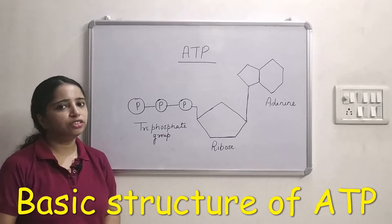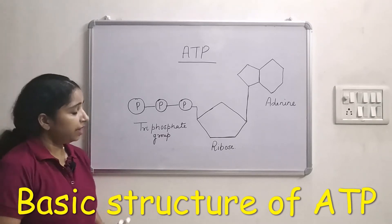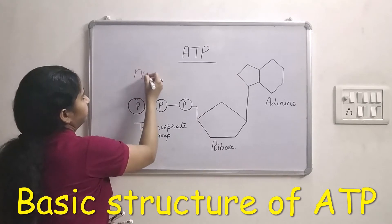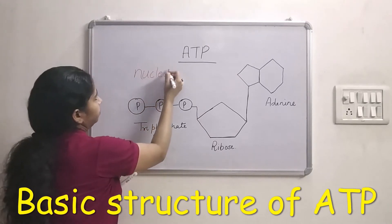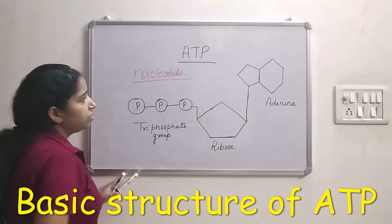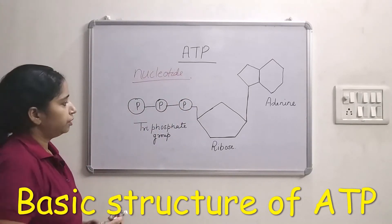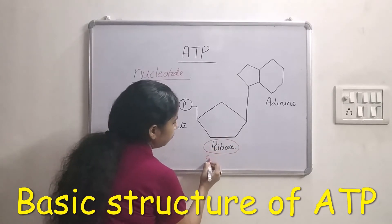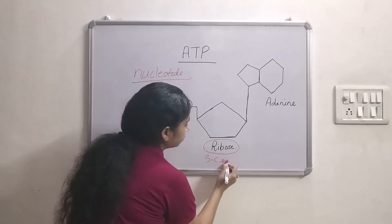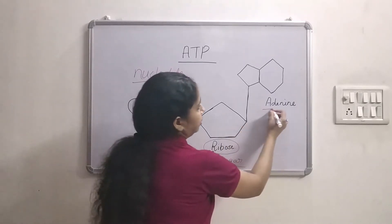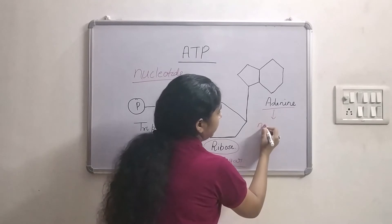Now let us discuss the structure of ATP. ATP is a nucleotide because it consists of three components. First component is ribose which is a 5-carbon sugar. Second component is adenine which is a nitrogenous base.